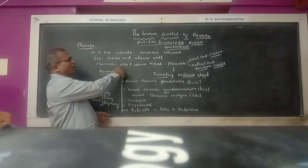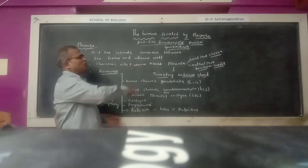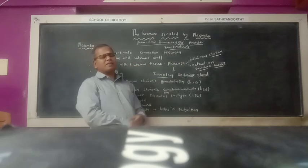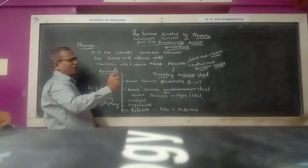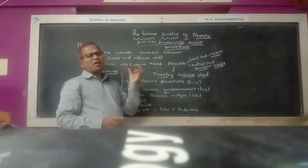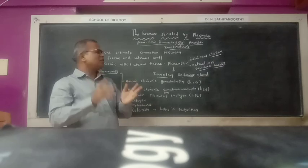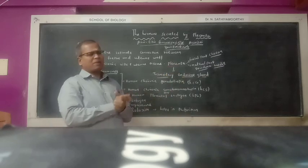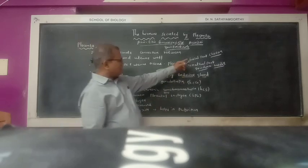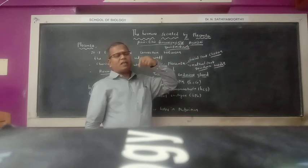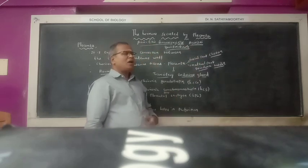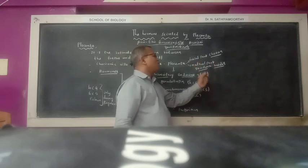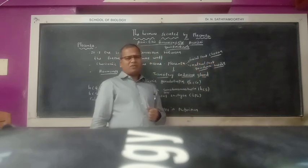Chorionic villi plus the uterine tissue are collectively known as the placenta. The fetal part is called chorion, and the maternal part is called decidua.